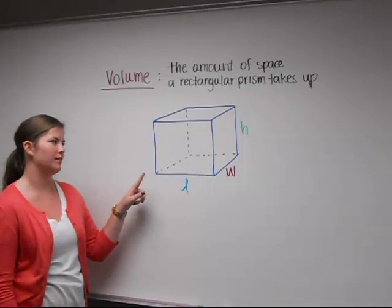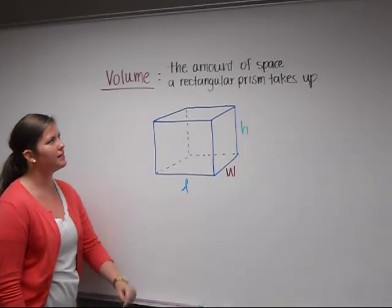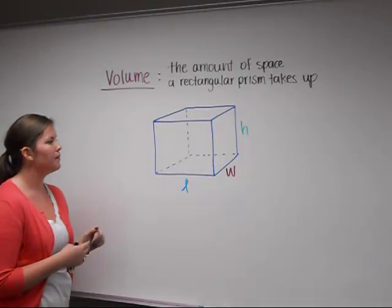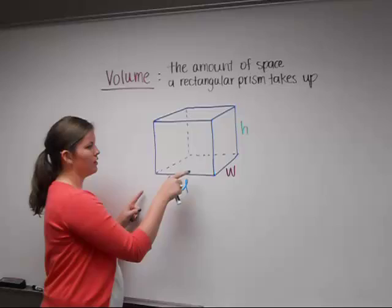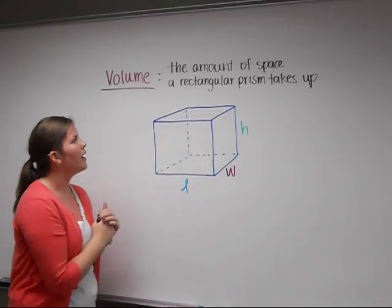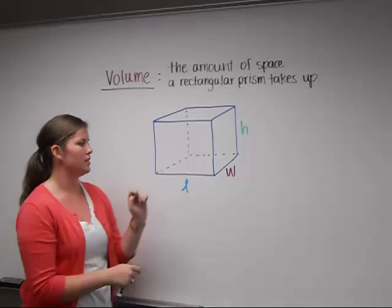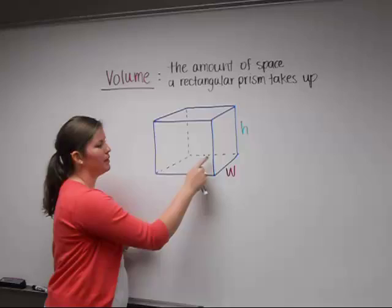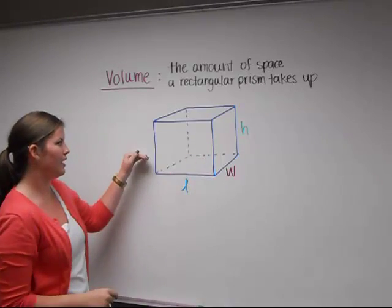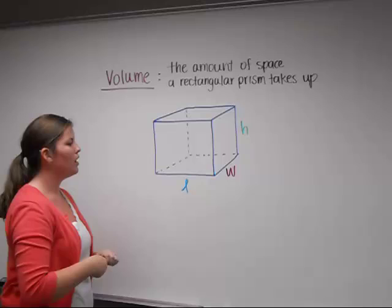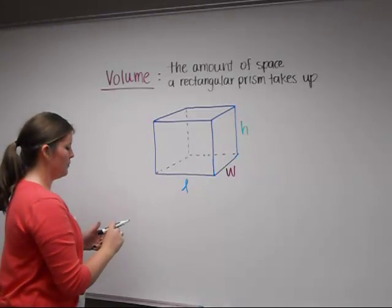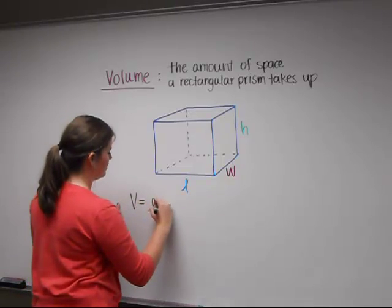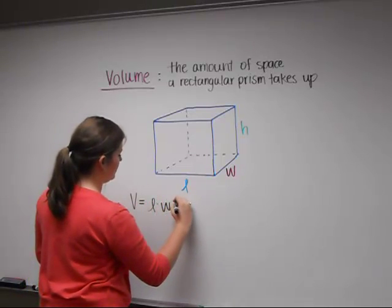Now we're going to find the volume of our rectangular prism. The volume is the amount of space a rectangular prism takes up. Volume is very similar to area — when we find area of a rectangle, we find length times height. The volume adds a third dimension, so we find length times width times height. We can think of this as finding the area at the base of our prism and stacking it, which gives us our height dimension. So our equation to find volume is V equals length times width times height.